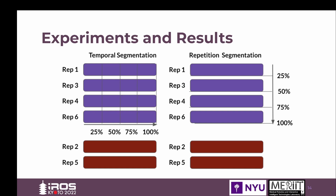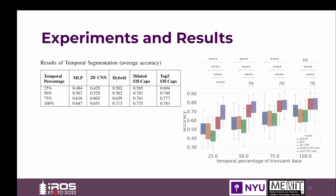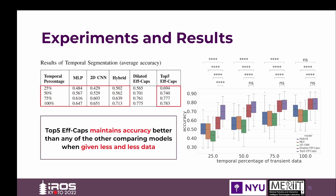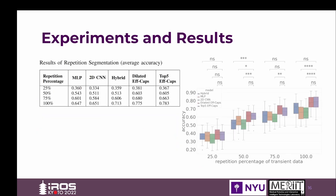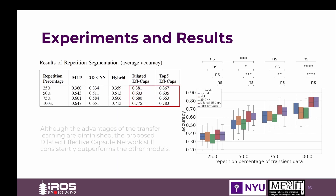In the temporal segmentation performance comparison, the top five efficient CapsNet can maintain high accuracy when given less data, while accuracies of other comparing models decrease drastically. The model evaluation with the temporal segmentation scheme illustrates an explicit advantage for the use of transfer learning. Given any amount of training data, the proposed efficient CapsNet with and without transfer learning consistently outperforms other models. For the repetition segmentation comparison, although the advantages of transfer learning are diminished since the task is highly correlated to the amount of data fed as training samples, the efficient CapsNet with and without transfer learning still consistently outperforms the other models.